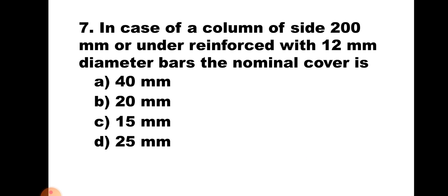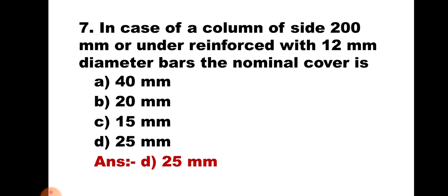Question number 7. In case of a column side 200 mm or under, reinforced with 12 mm diameter bars, the nominal cover is: A) 40 mm, B) 20 mm, C) 15 mm, or D) 25 mm. As given in IS 456, if the column side is 200 mm or under and it is reinforced with 12 mm diameter bars, then the nominal cover can be reduced to 25 mm. Hence the correct answer is D, 25 mm.